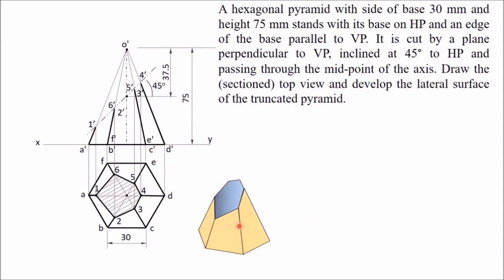Now we have to develop the lateral surface of this truncated pyramid. For development of the lateral surface of a pyramid, we use the radial line method. From a point O, draw an arc of radius equal to the slant height. The slant height is the true length of the slant edges — OA, OB, OC, OD, OE, OF are the six slant edges.